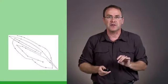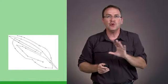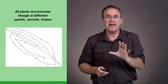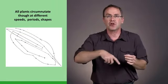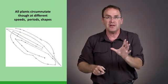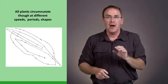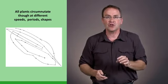Here's actually a picture of one of his traces from his book. He did this with numerous plants, and when he saw that each plant had its own characteristic shape of circumnutation, its own period, and its own speed. But every plant tested circumnnutated.